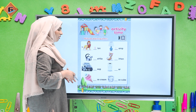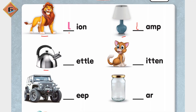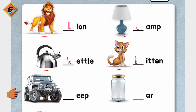The next one is kettle. Kettle — aapne yahan pe kicking K banana hai, to hum yahan pe likhenge letter K. And the next one is kitten. Aur kitten bhi kis se banta hai? Kicking K se banta hai. To yahan hum likhenge K.